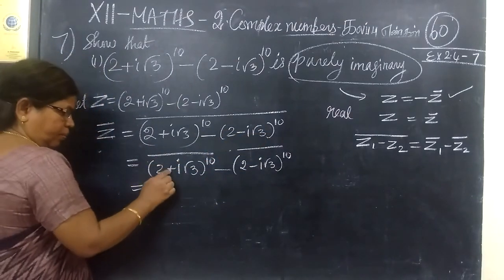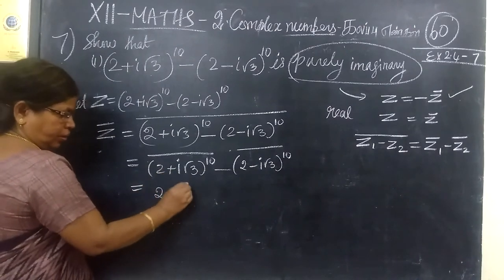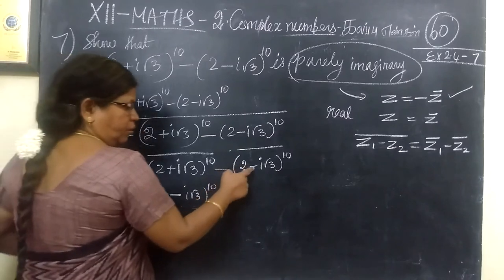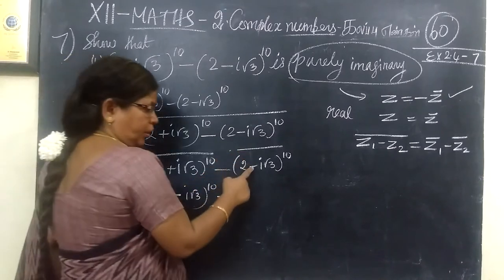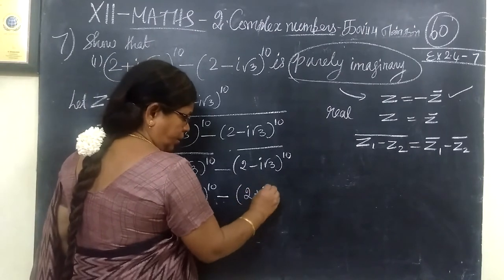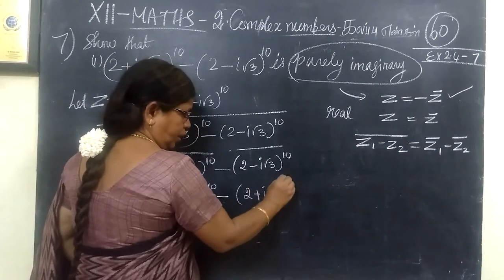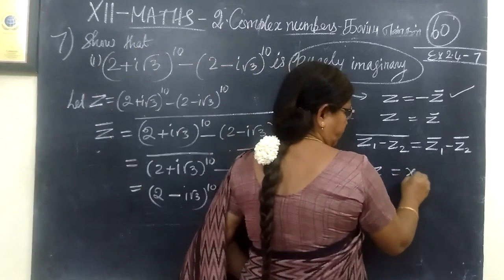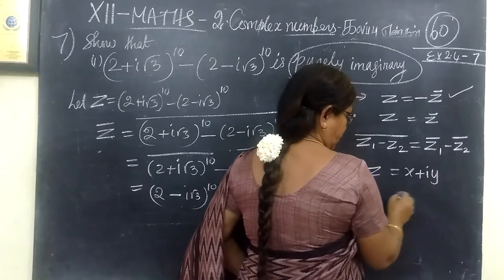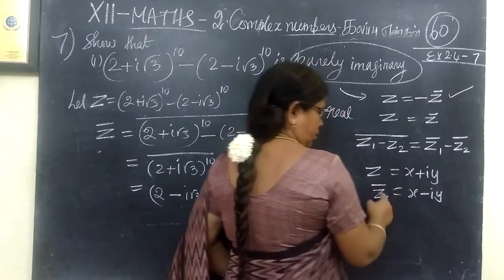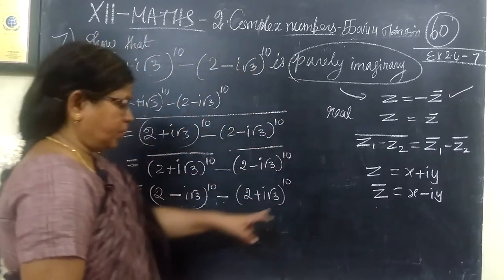Now put this bar here. So if we fill it, then we need to add bar. In this bar, (2 minus i root 3) whole power 10. Because z equal to x plus iy, z bar equal to x minus iy. So in this way, it is used to be done.